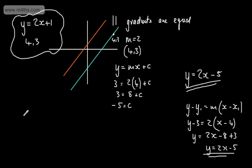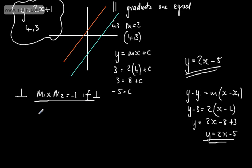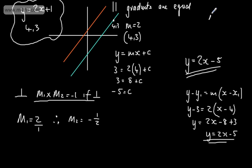Now let's find the line perpendicular to y equals 2x plus 1 that passes through the point (4, 3). For perpendicular lines, m1 multiplied by m2 equals minus 1. Since m1 is 2, m2 is the negative reciprocal. Thinking of 2 as 2 over 1, m2 is minus 1 half. For example, if m1 were 3 over 5, then m2 would be minus 5 over 3.